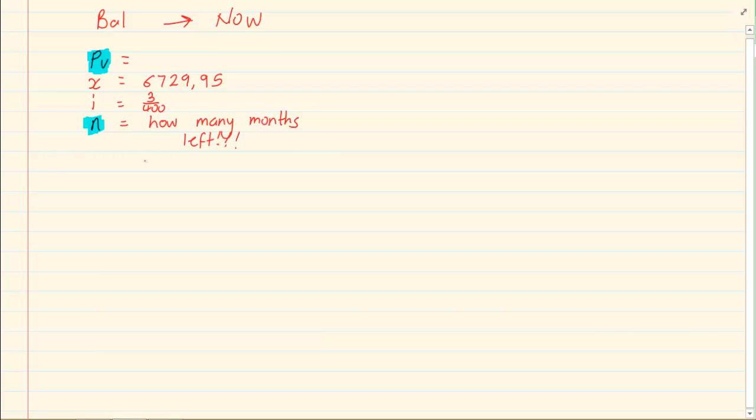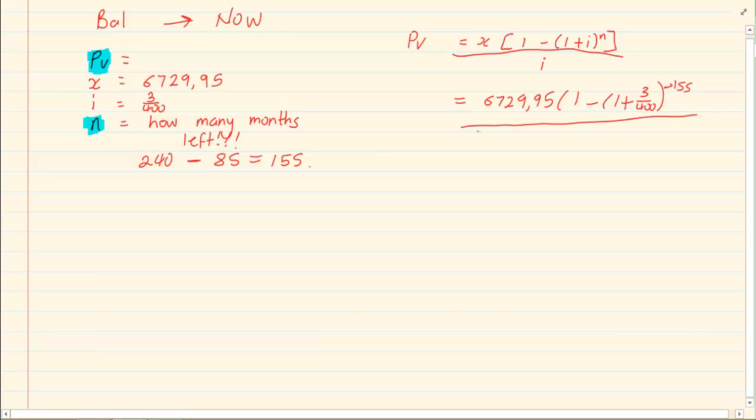So if you were going to pay 240, you have already paid 85. Then how many months do you still have left? You have 155 months left. Then you go to your formula. You substitute what you have. Our N is negative 155. All over 3 over 400. What is nice is that since you are solving for PV, all you have to do is press it into your calculator as you see it.